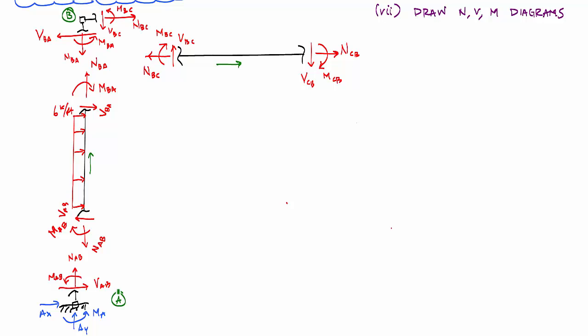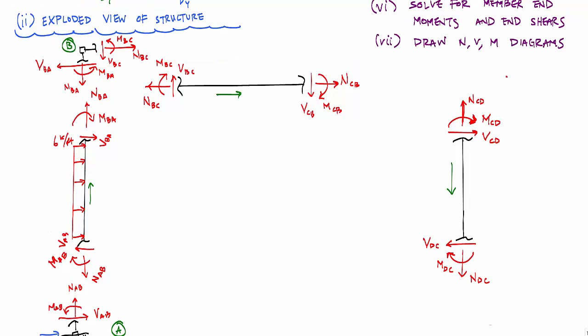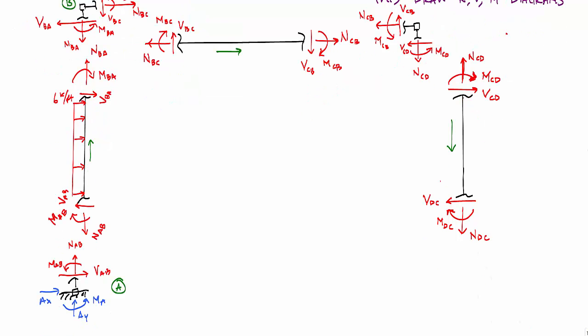And now I just repeat the process for the last member, member CD. And here it's again, as if I cut away from the frame, like this. I'm going to choose my beginning and end. This time I'm going to go top to bottom, my beginning will be joint C, my end will be D. And again, I draw my internal moments or my end moments using a clockwise sign convention. And my joints here would look joint C and similarly for joint D. And that is my exploded view for the structure.